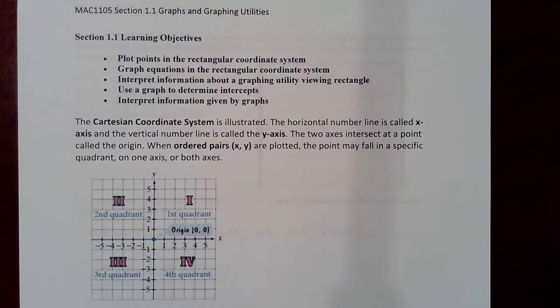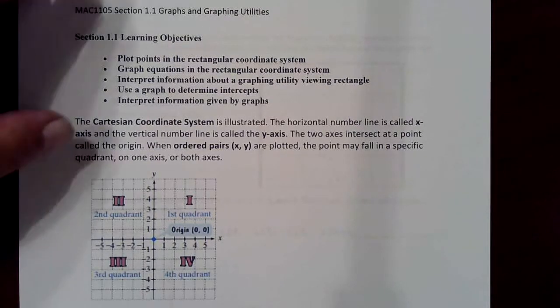Okay, this is section 1.1 for MAC 1105, and in this section we're going to review a little bit of information concerning how to plot points in the rectangular coordinate system, how to graph linear equations, how to interpret information about graphing utilities and how to set the viewing window so that you can see what you're graphing, and how to use a graph to determine the intercepts, namely the x and the y intercepts, and how to interpret information by graphs that model a particular real-life situation.